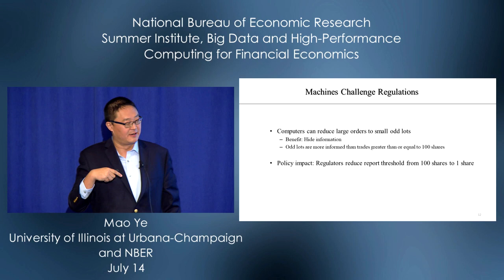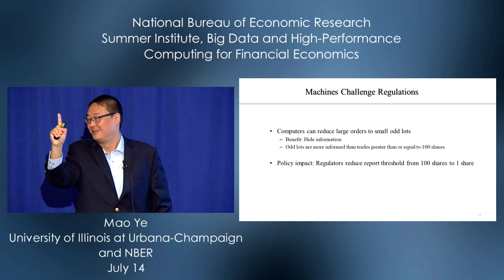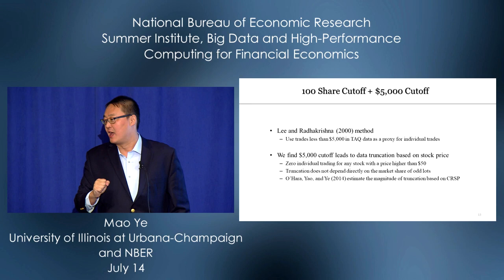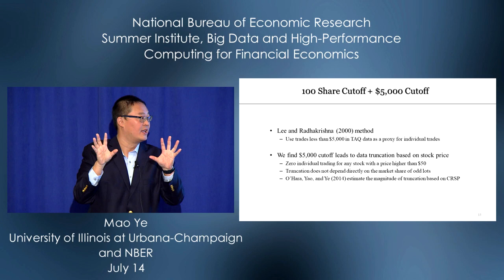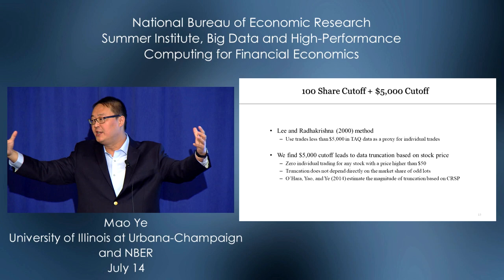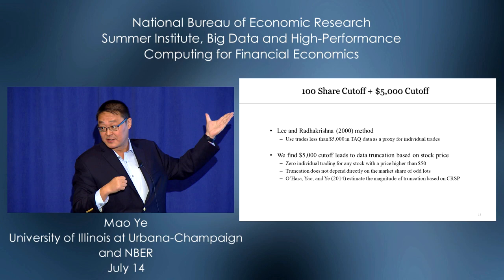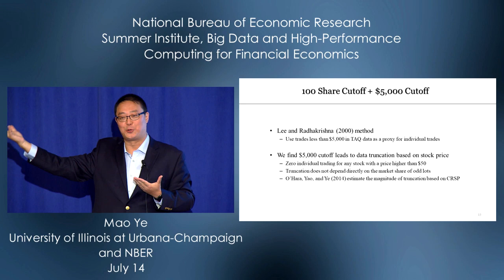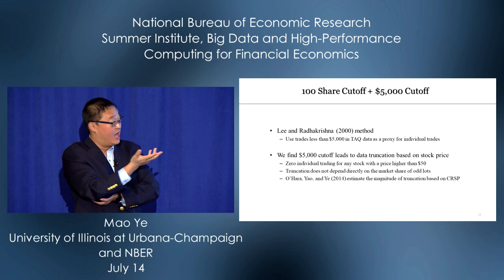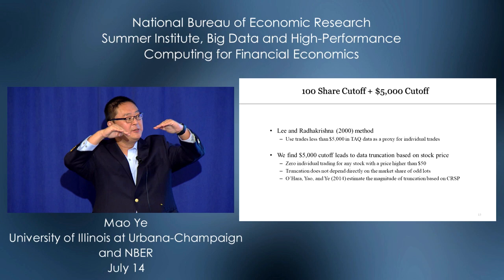This finding had policy impact. Regulators saw our paper and reduced the threshold to one share. But then we realized the regulation change — that cutoff — also affects earlier results. Sometimes you can have tiny truncations, but when combined with other truncations, it can be a big deal. There's a difficulty in finding a long time series of retail traders, so researchers use a proxy designed by Charles Lee: a $5,000 dollar cutoff, assuming small trades come from small traders.